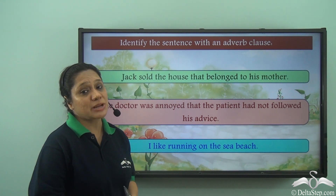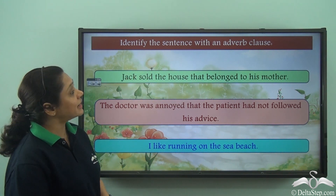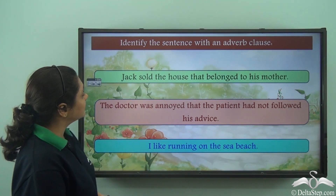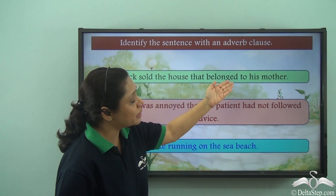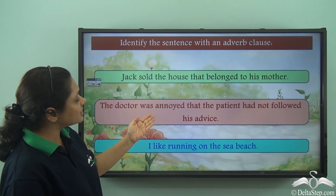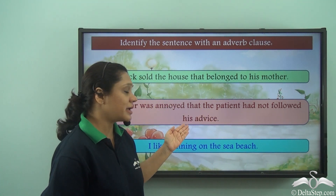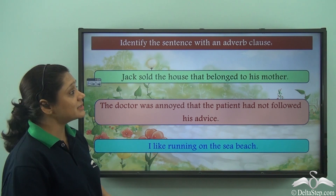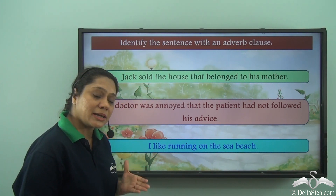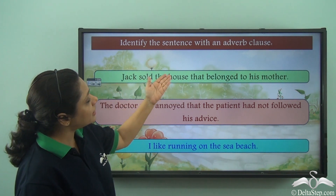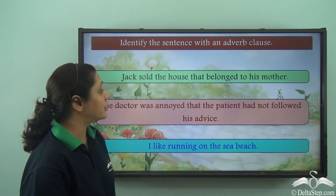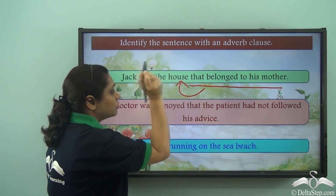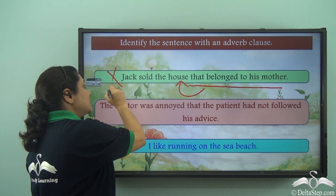Now that we have learnt about adverb clauses in great detail, let us do an exercise. Identify the sentence with an adverb clause from these three: 'Jack sold the house that belonged to his mother.' 'The doctor was annoyed that the patient had not followed his advice.' 'I like running on the sea beach.' In the first sentence, 'that belonged to his mother' describes the noun 'house' — so it is not an adverb clause.